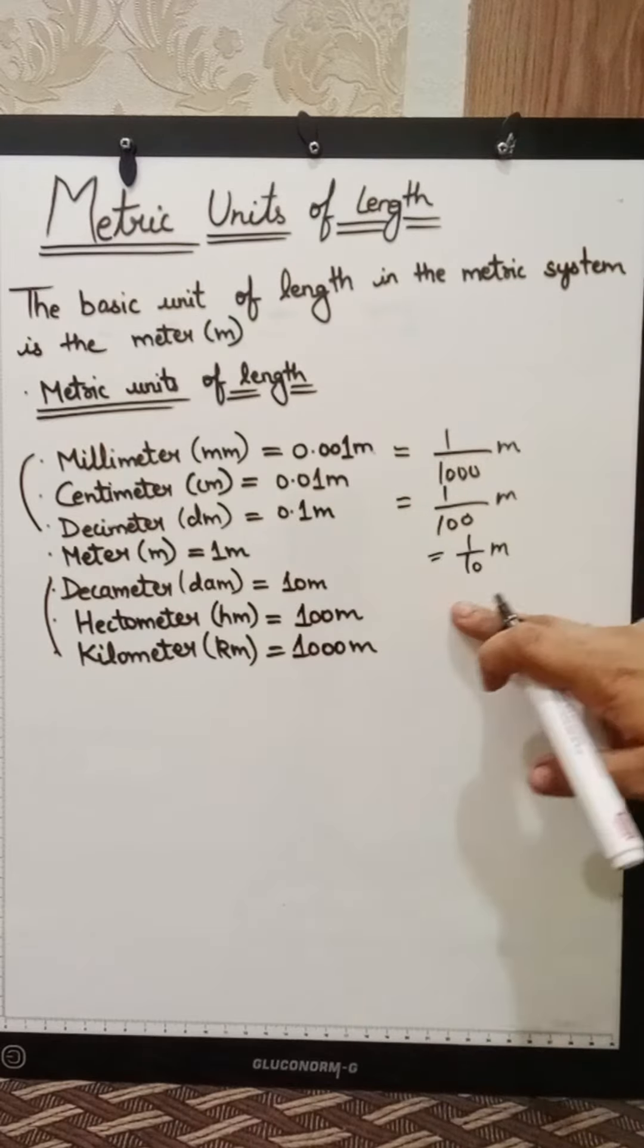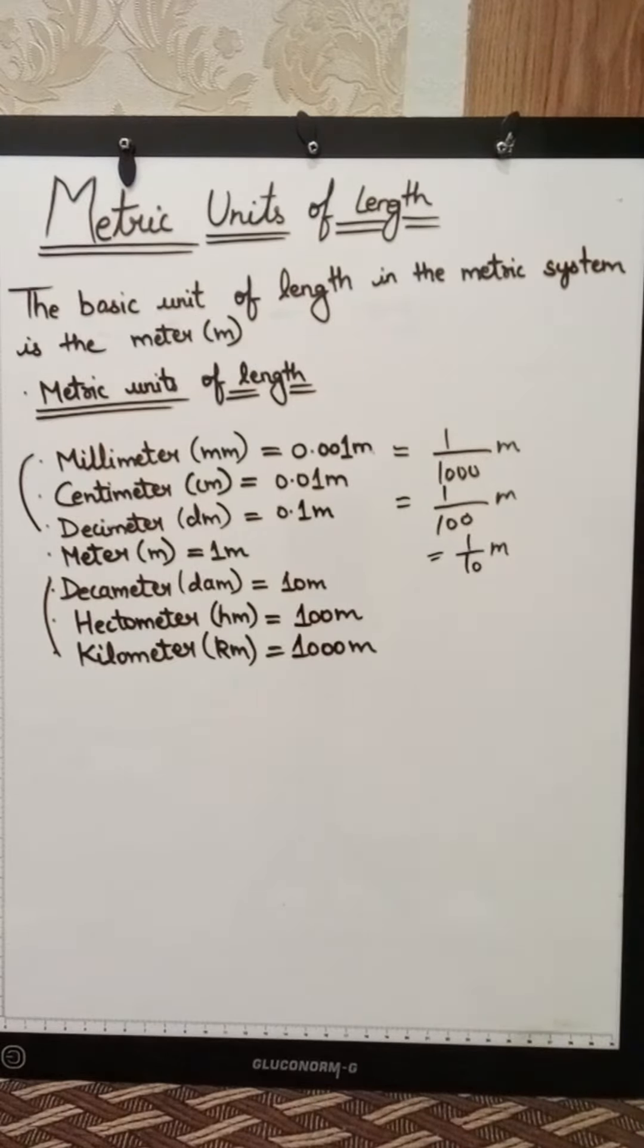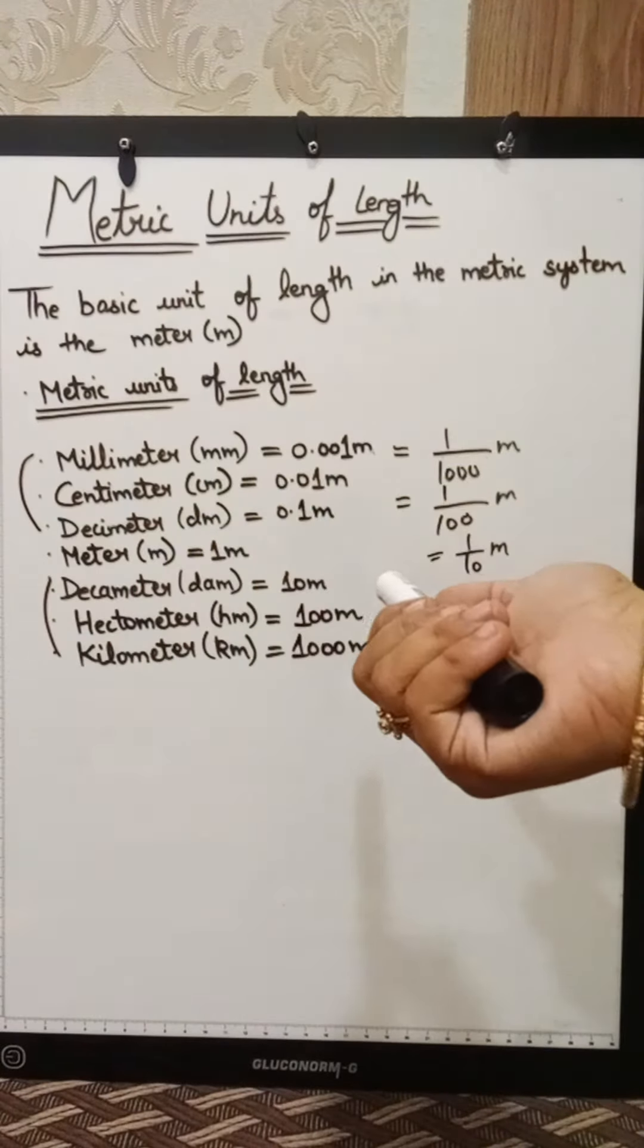These three are small, so they are divided. One basic thing has come to understand: these are small units, they will divide. After that, there is meter. 1 meter is equal to 1 meter.